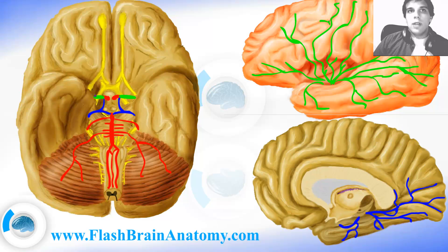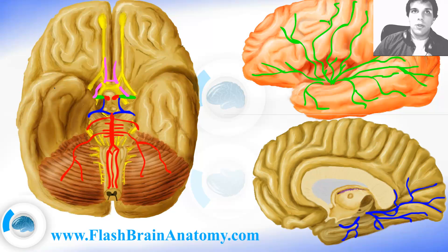Then we have the anterior cerebral artery, painted here in purple color. And here is the anterior communicating artery — it connects these two anterior cerebral arteries. This was the posterior communicating arteries, and this one over here is the anterior communicating artery.